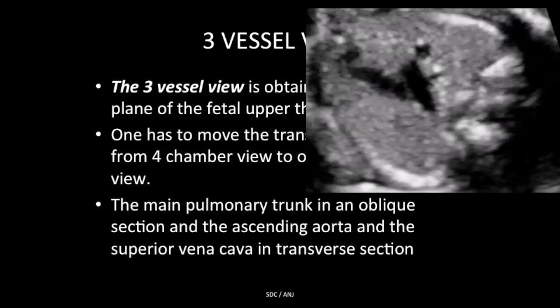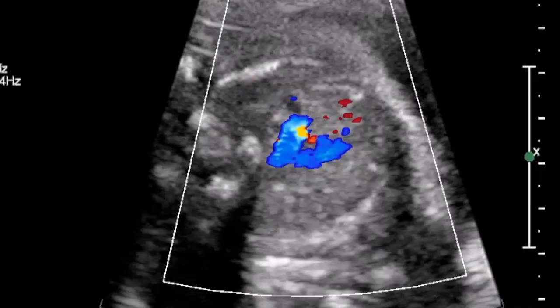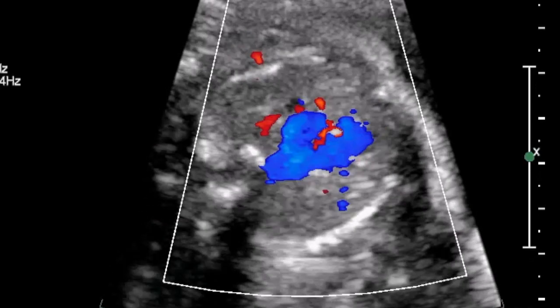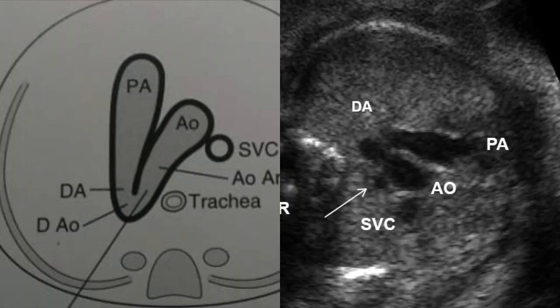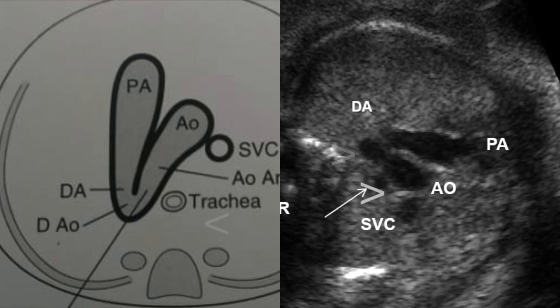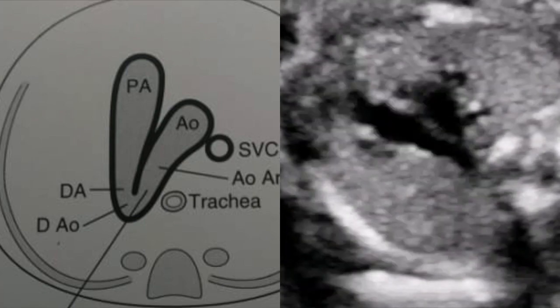In the three vessel trachea view, you will see the aortic arch and ductal arch merging together with an acute angle between them. Both arches are located to the left of the spine and trachea, which is an important anatomic landmark. They usually form a V-shape structure to the left of the spine and to the left of the trachea. The arrow here points to the trachea, with the SVC, aorta, pulmonary artery, aortic arch, and ductal arch all visible.